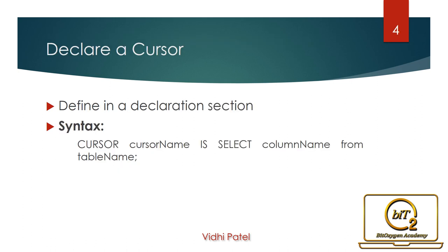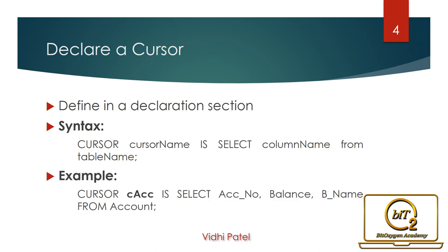Let's see execution of Explicit Cursors step by step. First is declaring a cursor. An Explicit Cursor should be defined in the declaration section of the PL/SQL block. It is created on a SELECT statement which returns more than one row. A cursor with a cursor name is declared and mapped to a query given by the SELECT statement. At this point, only the cursor is declared — no memory is allocated. In the example, cursor CACC is declared.